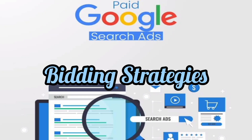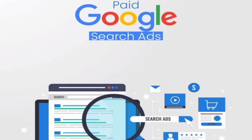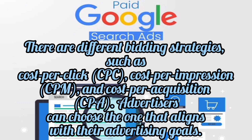Bidding Strategies: There are different bidding strategies such as cost per click, cost per impression, and cost per acquisition. Advertisers can choose the one that aligns with their advertising goals.